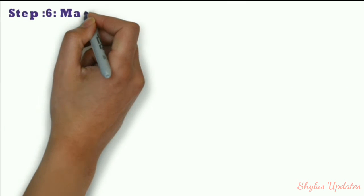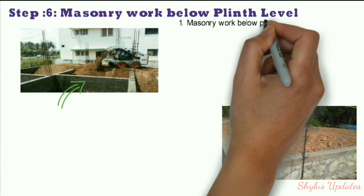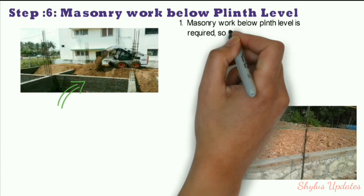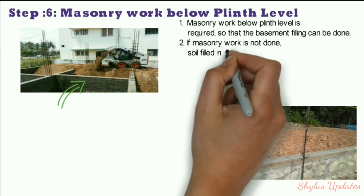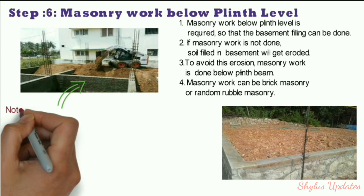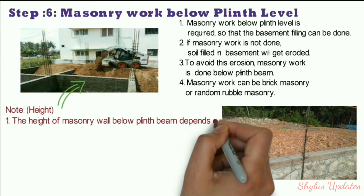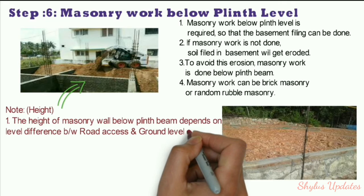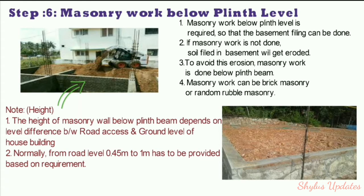Step 6: Masonry work below plinth level. Masonry work below plinth level is required so that basement filling can be done. If masonry work is not done, soil filled in the basement will erode. Masonry work can be brick masonry or random rubble masonry. The height of the masonry wall below the plinth beam depends on the level difference between road access and ground level, typically 0.45 to 1 meter.